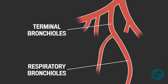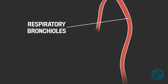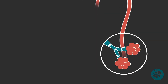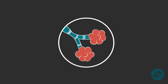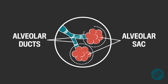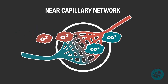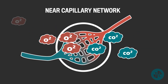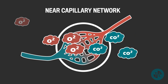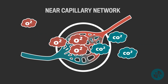Each terminal bronchiole branches into respiratory bronchioles. The respiratory bronchioles are very thin, and often this is where we first start to see some alveoli and alveolar ducts. The alveolar ducts will then open up into the alveolar sacs, which is where most of the alveoli will be found. When we see alveoli, we have reached the part of the respiratory system where gas will be exchanged. The thin alveolar cells and the extensive capillary network surrounding each alveolus allows gas to diffuse quickly and easily.